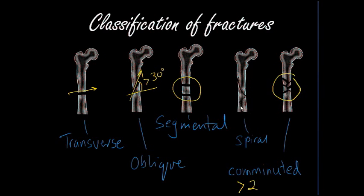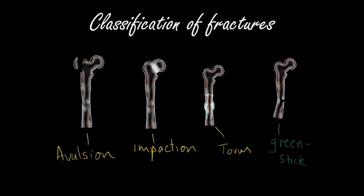Spiral fractures are quite common and happen as a result of rotational injuries. For example, a patient may have twisted their ankle and the rotational force causes a spiral fracture. It's worth remembering that a patient can have more than one fracture type in the same bone — for example, they may have an oblique fracture which is also comminuted, with multiple pieces but an oblique orientation.